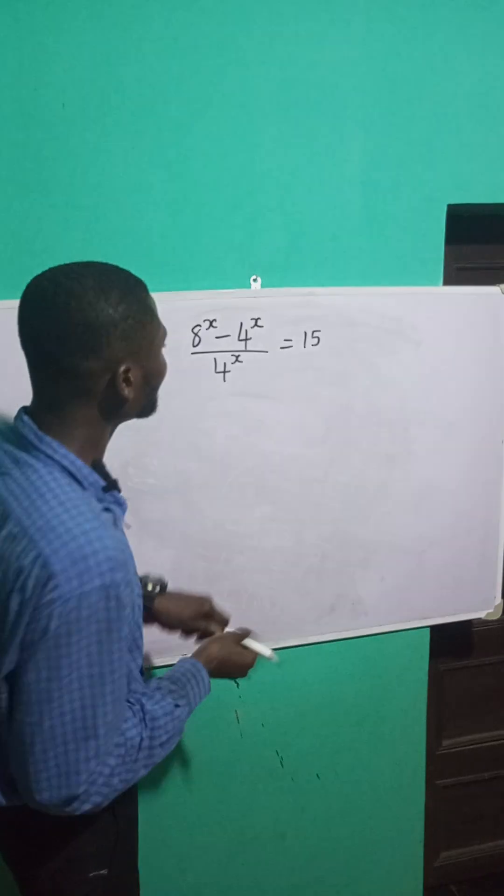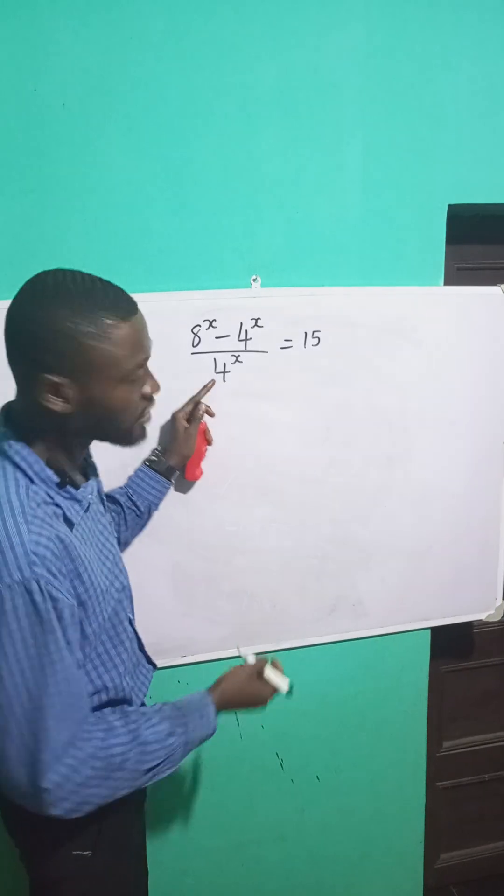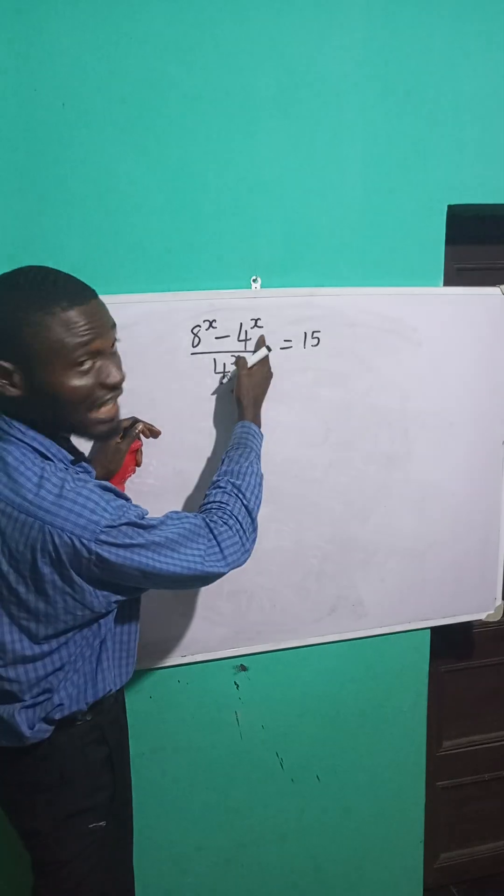Let's solve this exponential equation. This denominator of 4 raised to power x is dividing both numerators. It's dividing this and this.